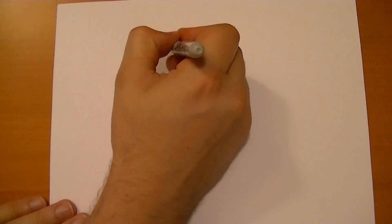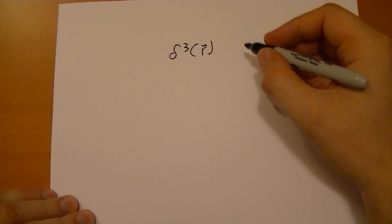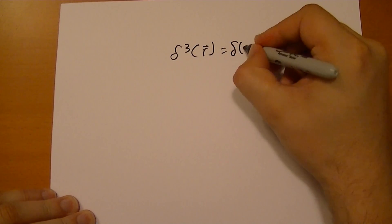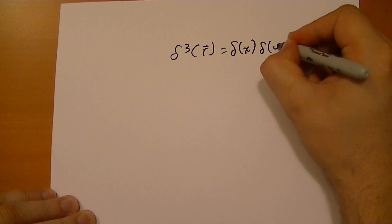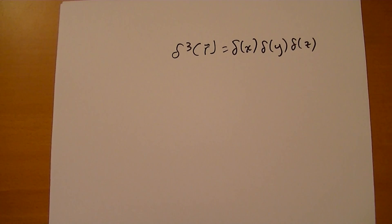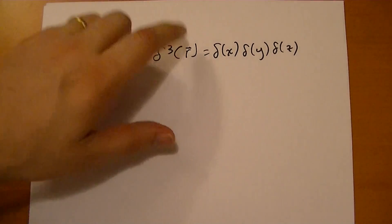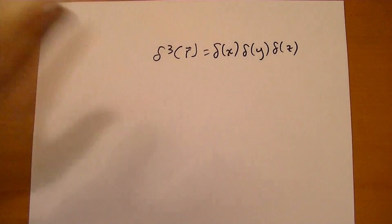We just define this δ³(r) to be equal to δ of the x component, δ of the y component, and δ of the z component. So if any of those r vector components are non-zero, then one of these terms is going to be zero. The entire thing will be zero. But if all of them happen to be zero, so r is pointing to the origin, then this thing blows up.